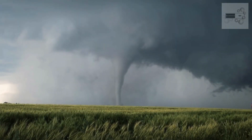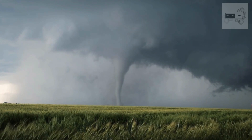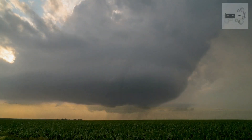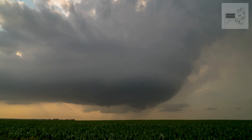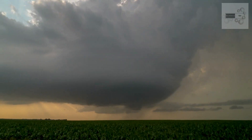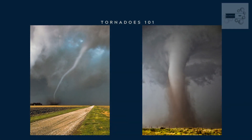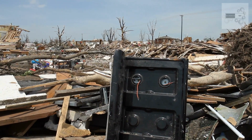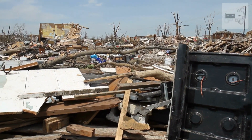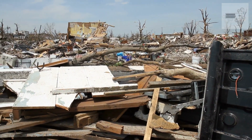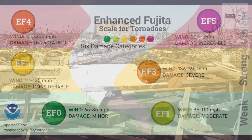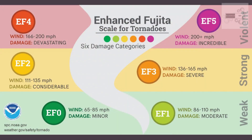Tornadoes are characterized by their wind speed, size, and duration. They can range from small, weak tornadoes that last only a few minutes, to large, violent tornadoes that can cause widespread destruction and last for hours. Tornadoes are also classified using the Enhanced Fujita scale, which measures the intensity of a tornado based on the damage it causes.